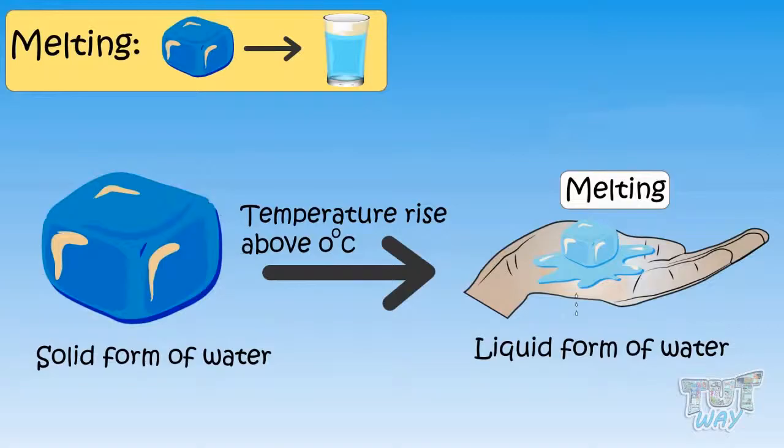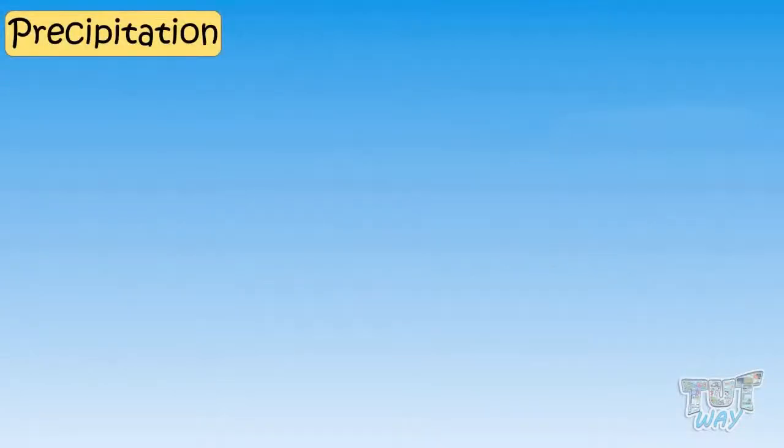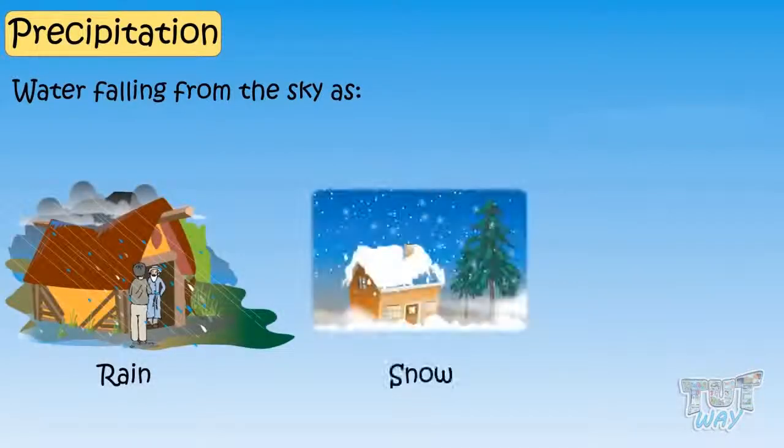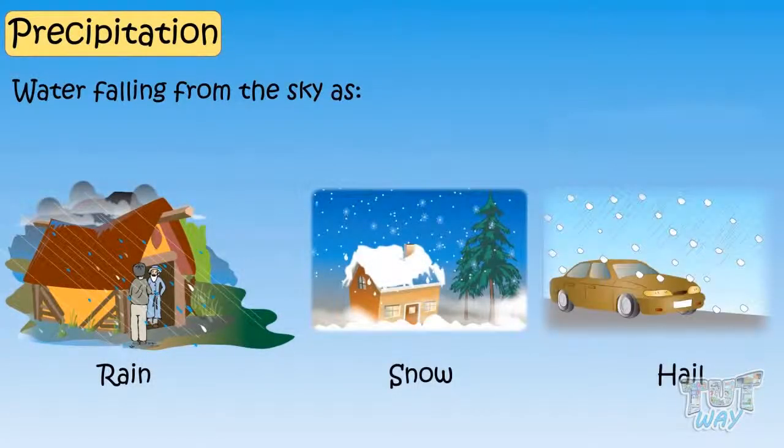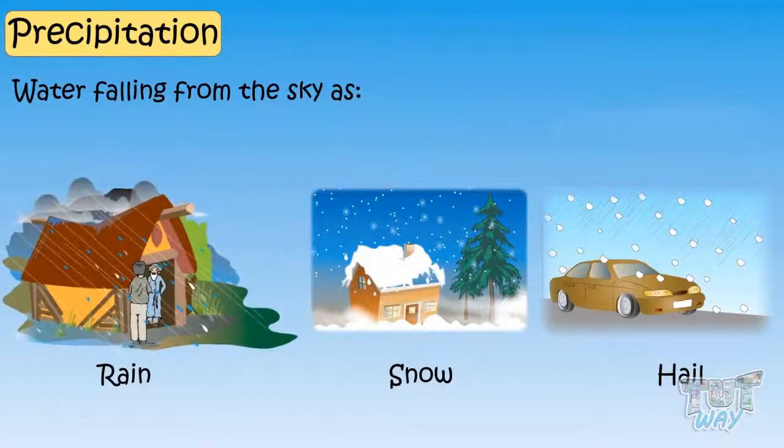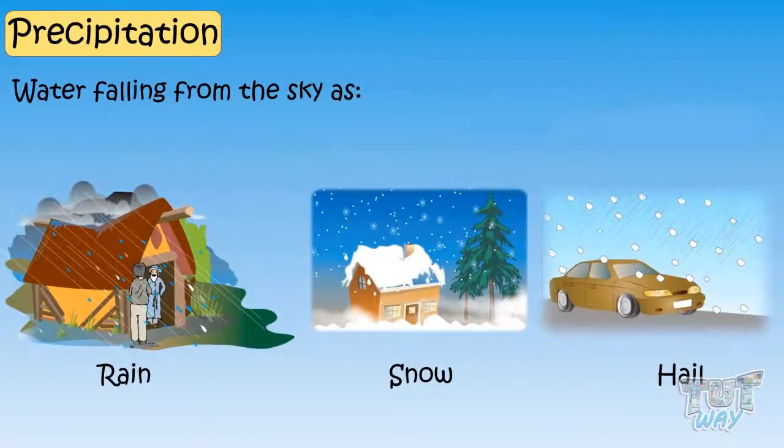Now let's learn what is precipitation. Water falling from the sky as rain, snow, or hail is called precipitation. Rainfall, snowfall, hailstorms are all examples of precipitation.